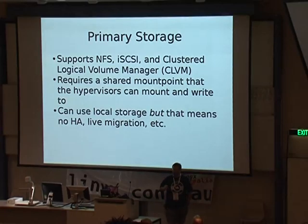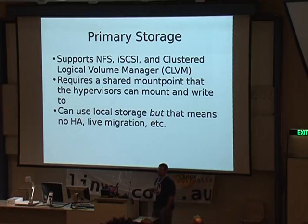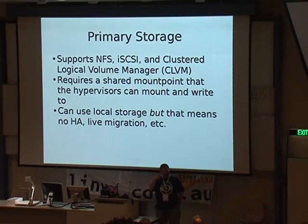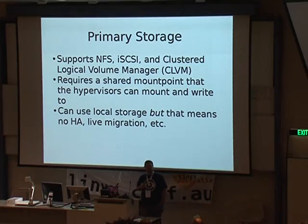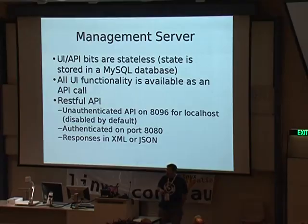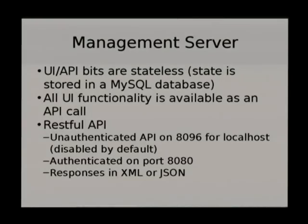Primary storage can use local storage, but then there's no high availability or VM migration. For customers that need really high performance in certain workloads it's great, but I don't recommend it for most workloads because if a host falls over, you lose your VMs. Primary storage also supports NFS, iSCSI, and CLVM, requiring a shared mount point for all hypervisors. The management server is stateless and all functionality is available via API — authenticated on port 8080 with responses in XML or JSON.